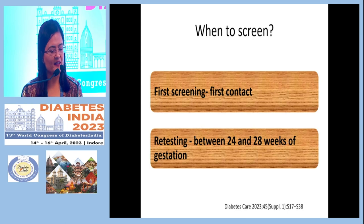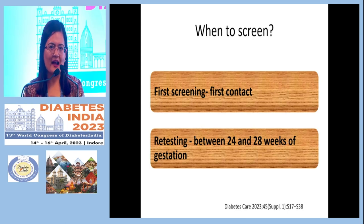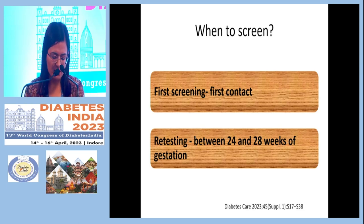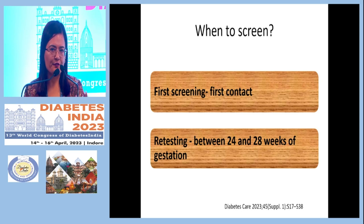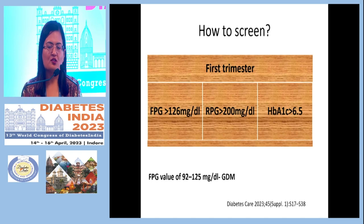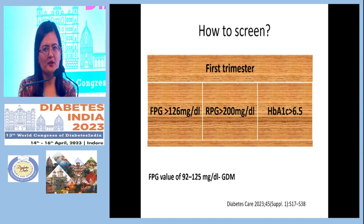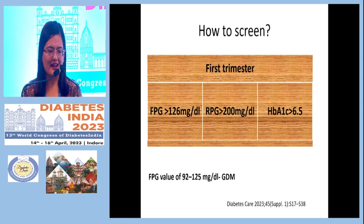If the first screen is negative, screening should be repeated at 24 to 28 weeks of gestation. Ideally, whenever a pregnant female comes to the OPD, she should be screened for diabetes. If negative at the first screen, screening is repeated at 24 to 28 weeks.